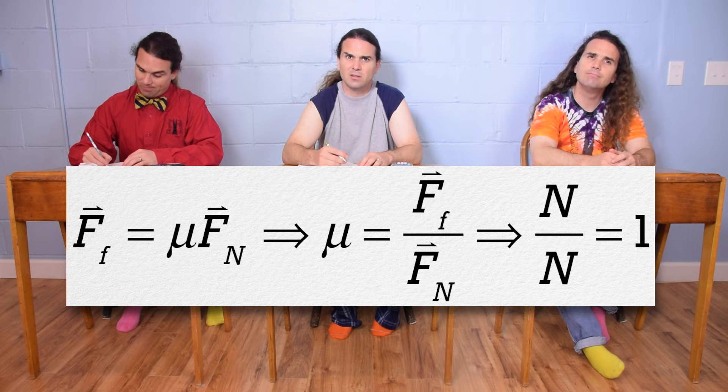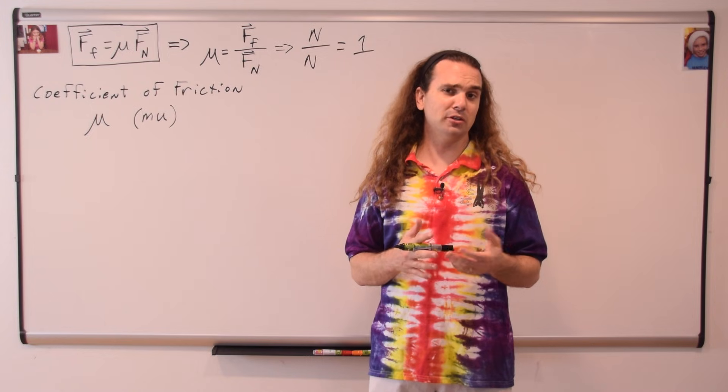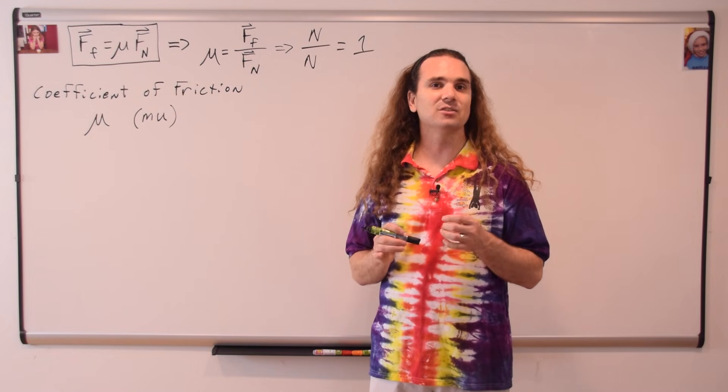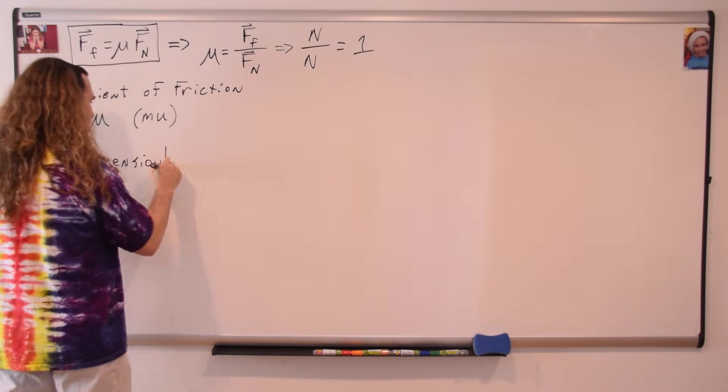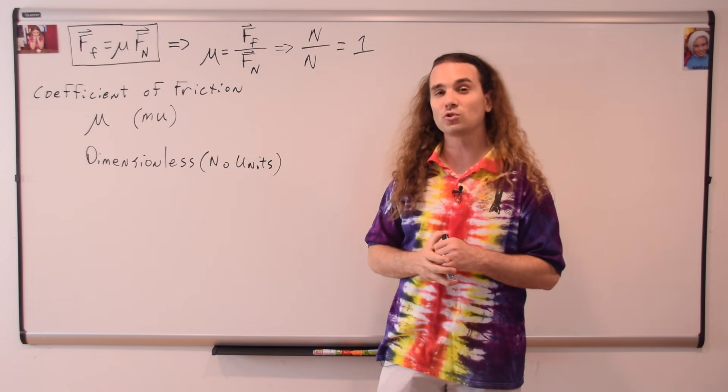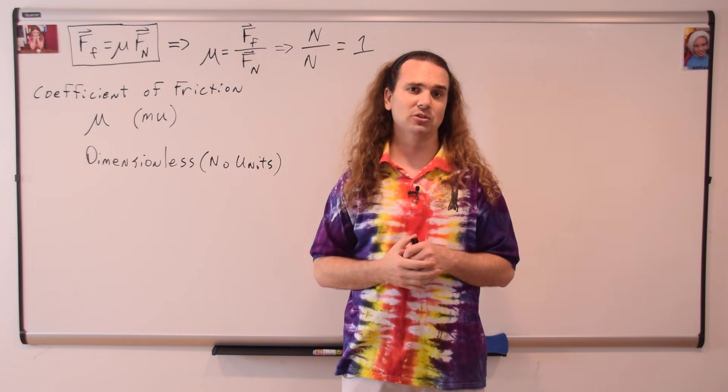Is the coefficient of friction dimensionless? Yes, mu, the coefficient of friction, is our first dimensionless variable. It has no units. It represents the ratio of the force of friction divided by the force normal for any two given surfaces and therefore has no dimensions.